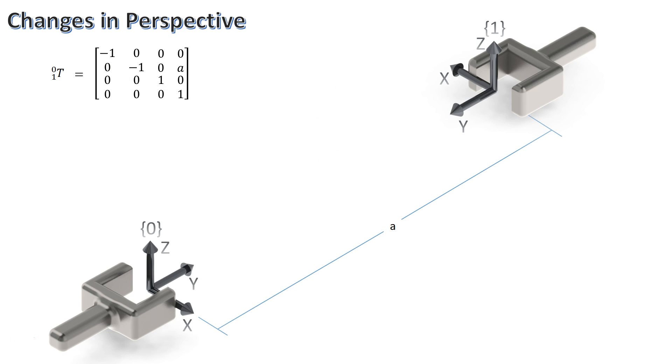Another way transformation matrices can be used is to give an object in space a change in perspective with respect to a given frame. For example, let's say I want two robotic arms working together to grab a heavy object. The object with respect to the end effector at frame 1 is going to be different coordinates than the end effector at frame 0. If we know the coordinates of the object with respect to frame 1, and we know the transformation matrix between the two frames, then we can figure out the coordinates with respect to frame 0.